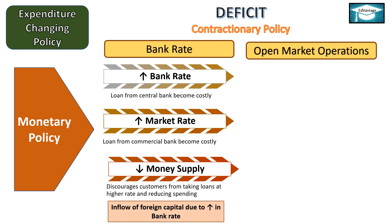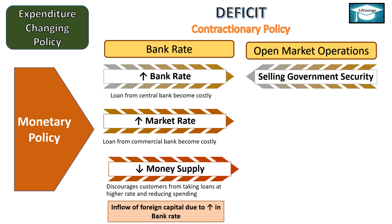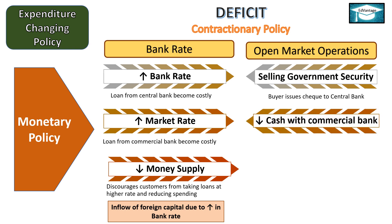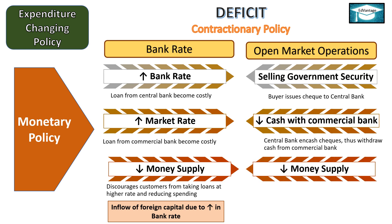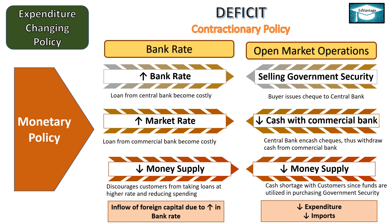Further, there is inflow of foreign capital due to increase in the bank rate. Simultaneously, the central bank can sell government securities in the open market. Buyers issue checks to the central bank, resulting in decrease in cash with commercial banks and a decrease in money supply. There is cash shortage with customers since funds are utilized in purchasing government securities, which reduces their spending. The decrease in expenditure leads to decrease in imports. Thus, with the help of contractionary monetary policy, the deficit in the balance of payment is corrected. The exact reverse situation arises in the case of surplus, wherein expansionary monetary policy is used.